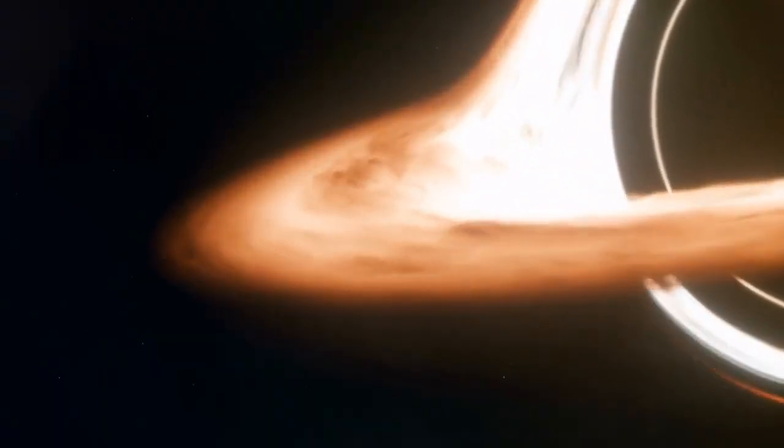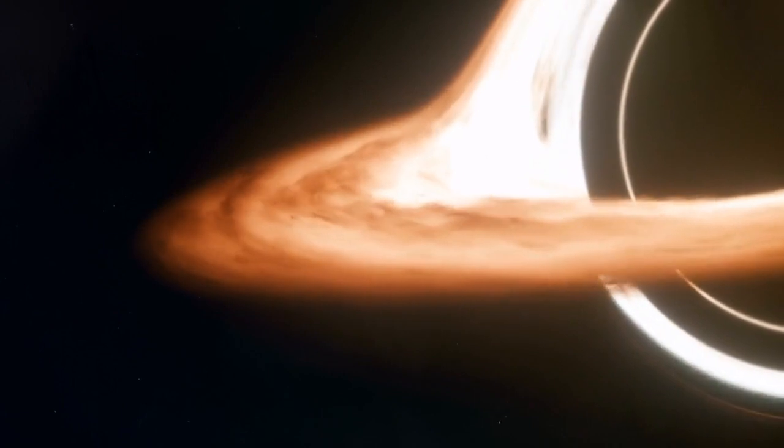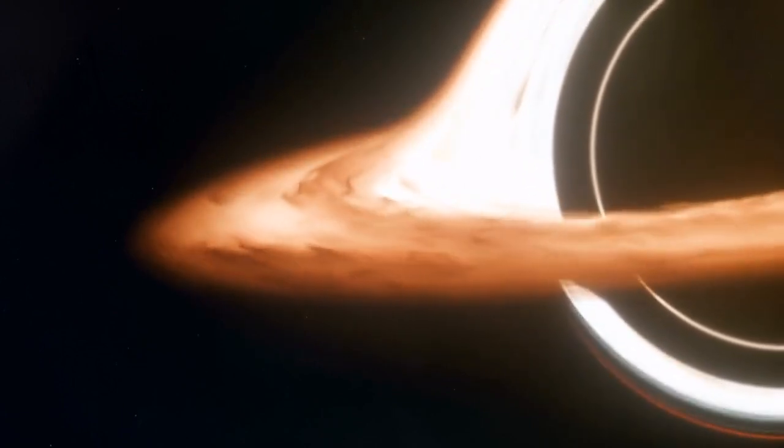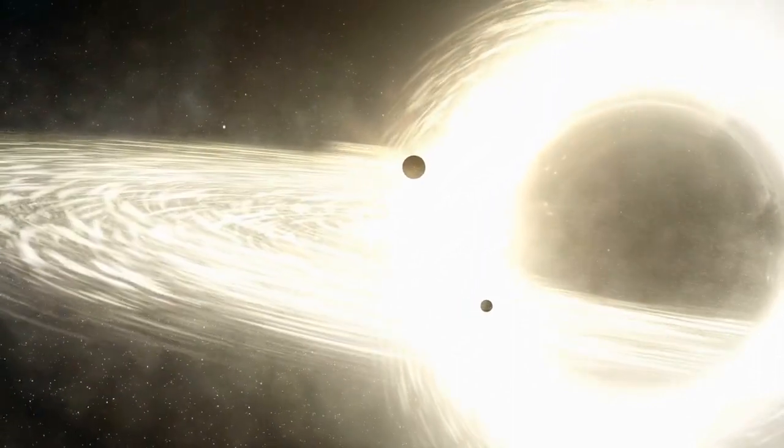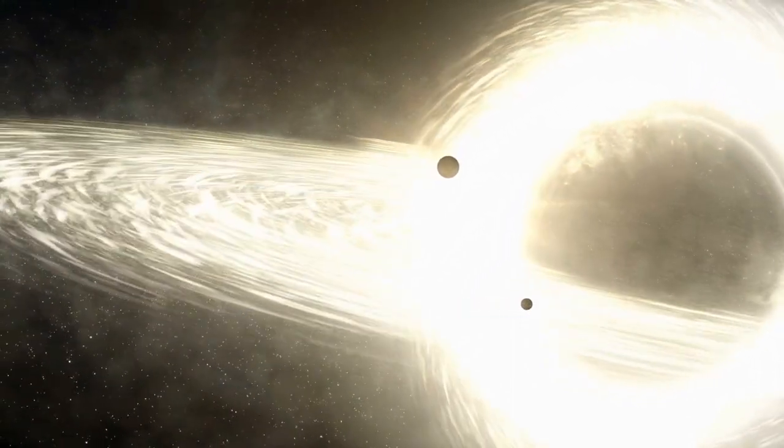Around this singularity, an event horizon forms, a boundary beyond which escape is impossible. It's as if the very fabric of space is bent in a way that nothing, not even light, can break free from its grasp. The mass of the singularity determines the size of this event horizon, forever imprisoning anything that crosses it.